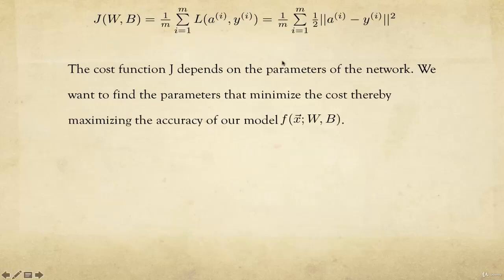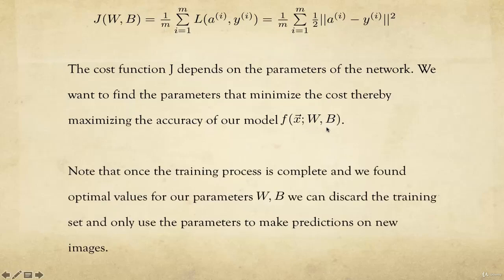The cost function depends on the parameters of the network. We want to find the parameters that minimize the cost, thereby maximizing the accuracy of model f. Once we complete the training process and find the optimal parameters, we can discard the training set and use those parameters to make predictions on new images — as demonstrated in the first lecture notebook where I loaded previously-trained optimized parameters.